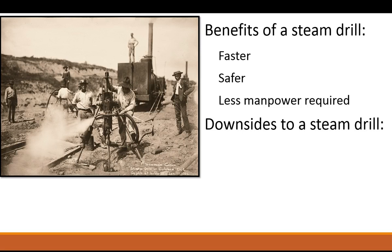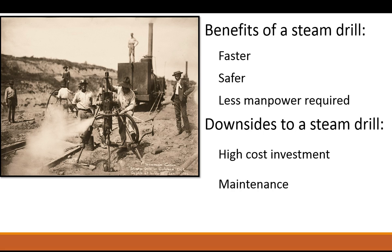Now what were some of the downsides to automation — not just the steam drill but automation in general? One is the high cost investment. Where you previously had men supplied with spikes, tongs, and hammers, now you've got to buy an engine as well as a steam drill, which was state-of-the-art technology at the time, so they had to spend a lot more money upfront. There's also maintenance. With any automated process, it's an absolute that you're going to have to do maintenance — there are a lot of moving parts, chances of the drill breaking, belts, chains, sprockets to replace.